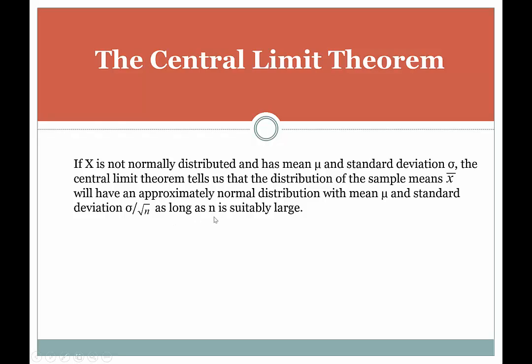However, if you want to assume the normality part — if you want to assume the distribution is approximately bell-shaped — you will have to have a pretty large n. So what makes n large enough? Let's take a look.